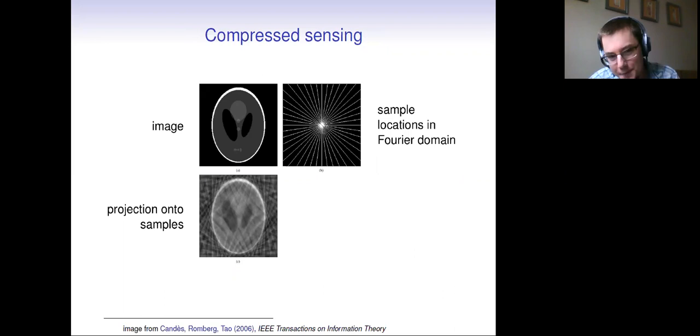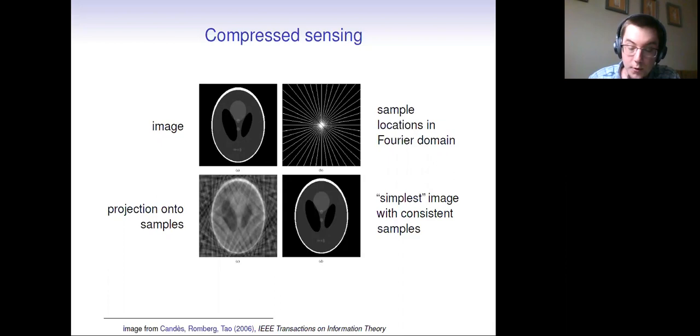So Donahoe put this in a pretty decent way back in 2006 asking why you would go through so much effort if you could just directly measure what you actually want. And addressing his questions is roughly what compressed sensing is attempting to do. Here's a famous image from a 2006 paper of Candace Romburg and Tao where the goal is to recover the image on the top left. Rather than grabbing every single pixel, maybe you only sample some locations in the Fourier domain on the top right. And 20 years ago, the state of the art involved projecting directly onto those samples.